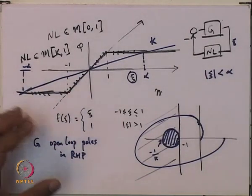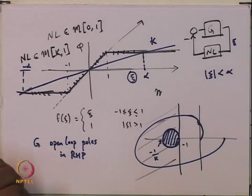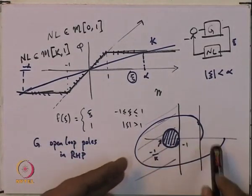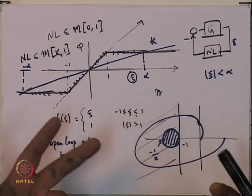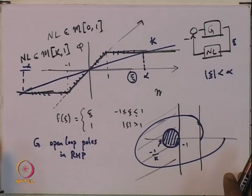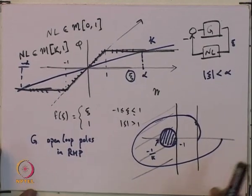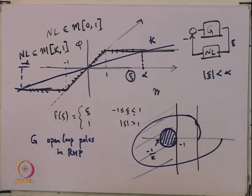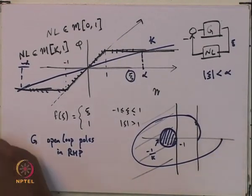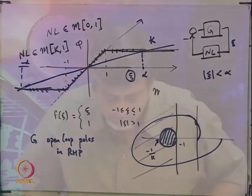So there are various things that you can do with the circle criterion depending upon how the original Nyquist plot looks. With that, I am out of time for this lecture, so let me stop here and we will continue with the new topic next lecture.